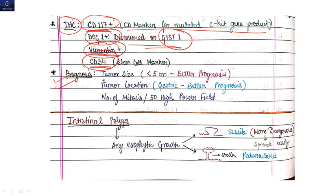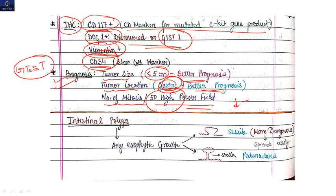Now coming to the prognosis part. It will depend on three things: tumor size, tumor location, and number of mitoses per 50 high-power field. If tumor size is less than 5 centimeters, then it will be better prognosis. If tumor location is gastric, then better prognosis. Number of mitoses per 50 HPF if low, then better prognosis. This is how much you have to write if a question comes on GIST as short notes.